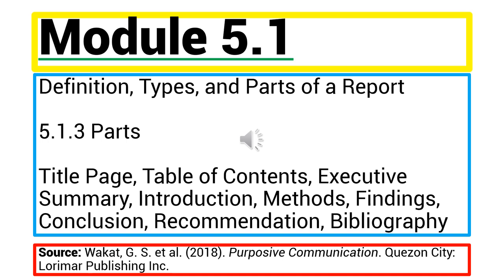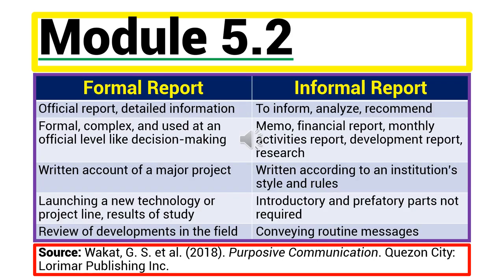The parts of a report are: Title page, Table of contents, Executive summary, Introduction, Methods, Findings, Conclusion, Recommendation, and Bibliography. The characteristics of a formal report are: it is an official report containing detailed information; it is formal, complex, and used at an official level like decision-making; it is a written account of a major project, such as launching a new technology or project line, or results of a study; and it is a review of developments in the field.